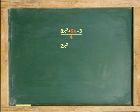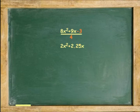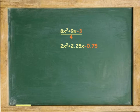Next, 9x divided by 4 equals 2.25x. And last, negative 3 divided by 4 equals negative 0.75. Answer: 2x squared plus 2.25x minus 0.75.